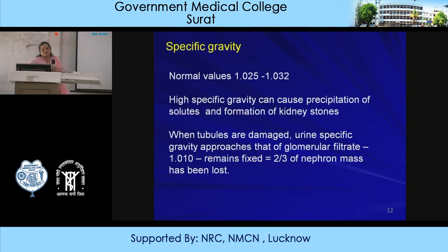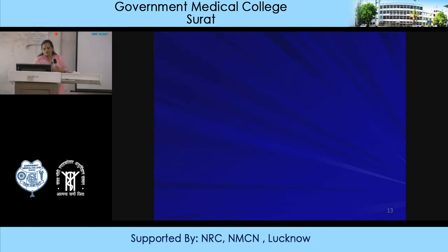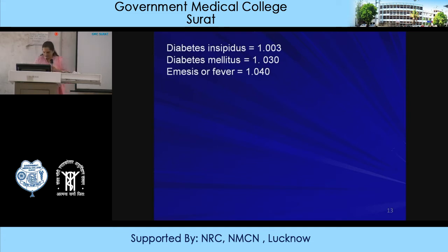Specific gravity ranges from 1.001 to 1.040. High specific gravity can cause precipitation of solutes and formation of kidney stones. When the tubules are damaged, urine specific gravity approaches that of glomerular filtrate - 1.010 - which remains fixed when about two-thirds of the nephrons are lost. In diabetes insipidus, where ADH is not responding, we have dilute urine and specific gravity decreases to 1.003. In diabetes mellitus it is 1.030, and in fever it may reach 1.040.